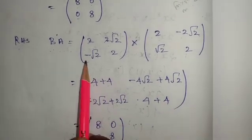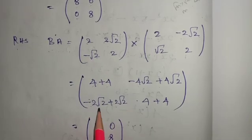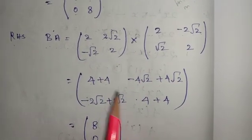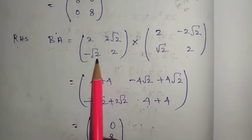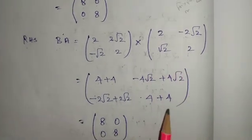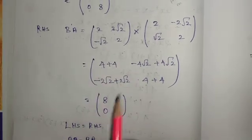Right hand side BA: 2 into 2 is 4, minus root 2 into 2, minus 2 root 2, 2 into root 2, 2 root 2. Minus root 2 into minus 2 root 2, 4. 2 into 2, 4. 4 plus 4, 8.